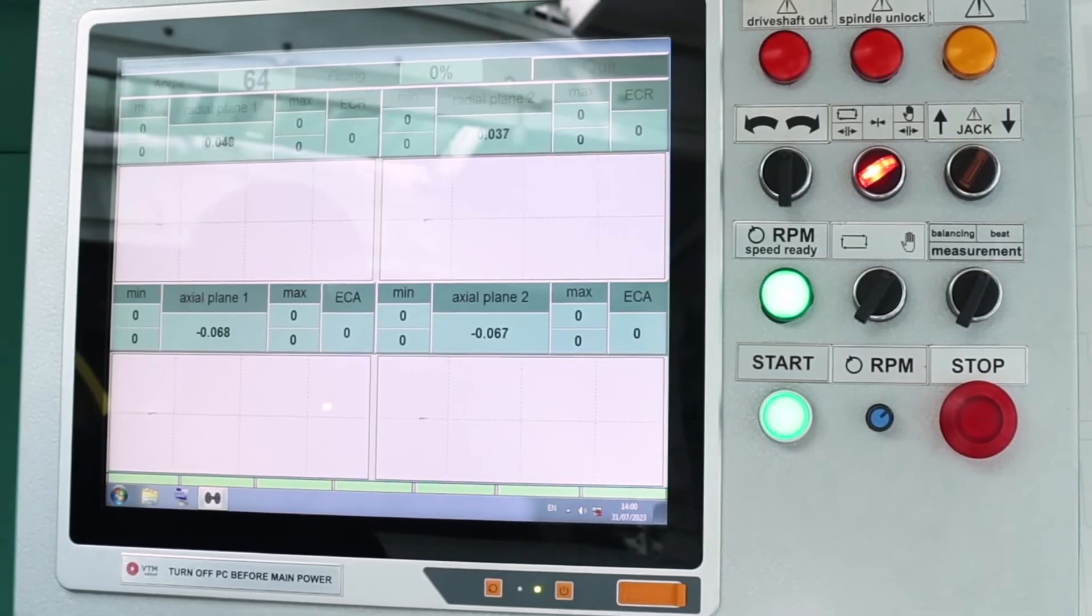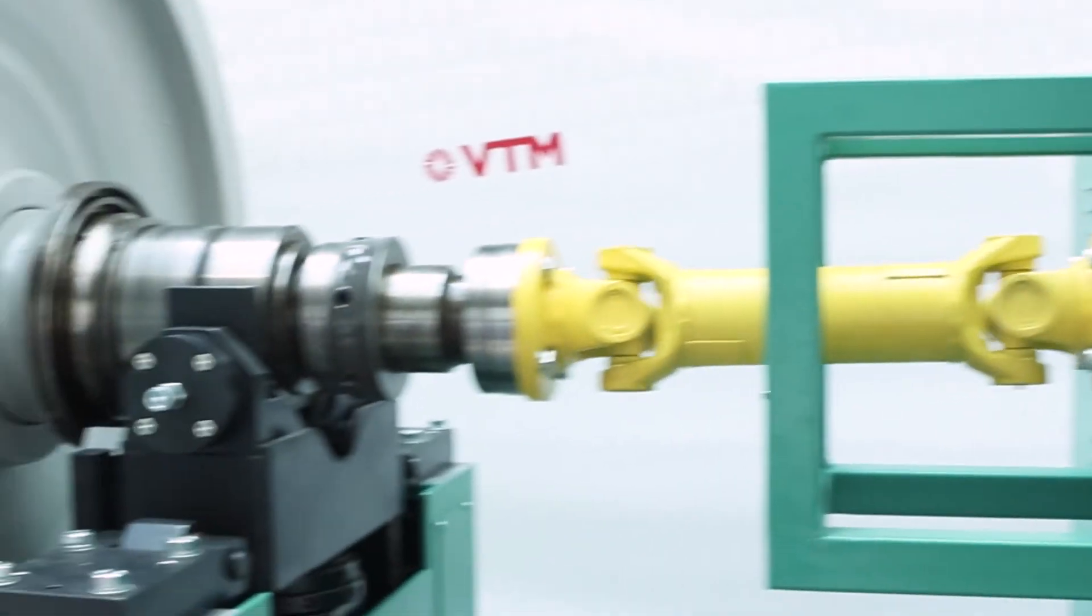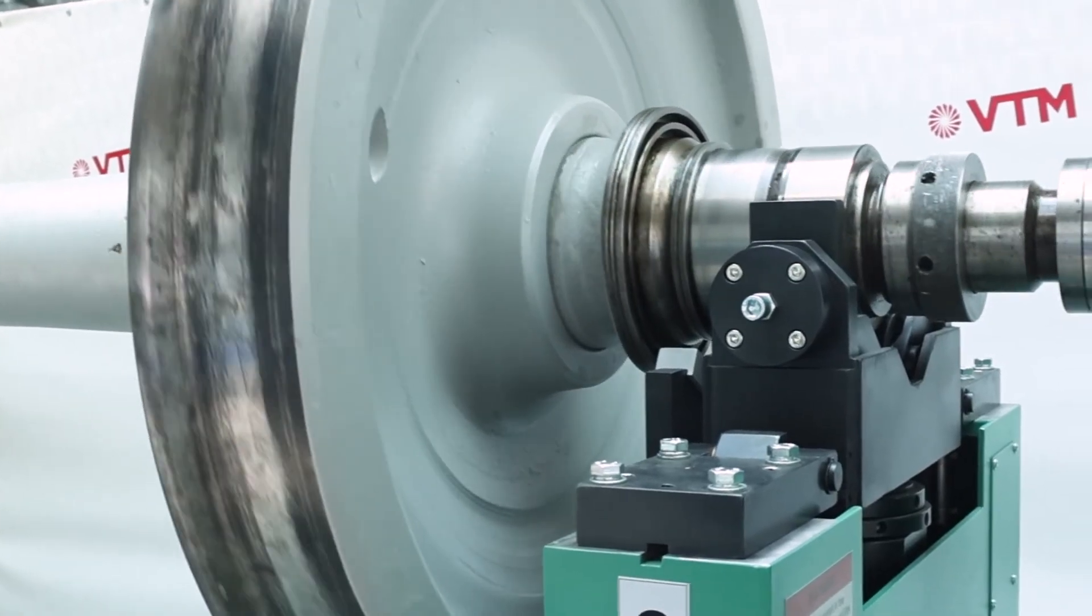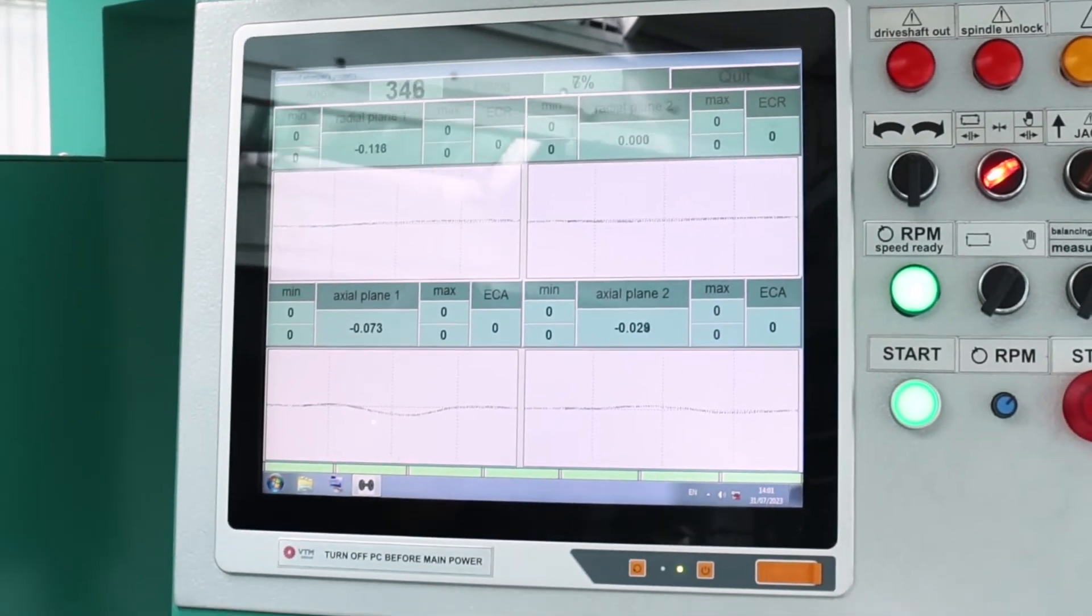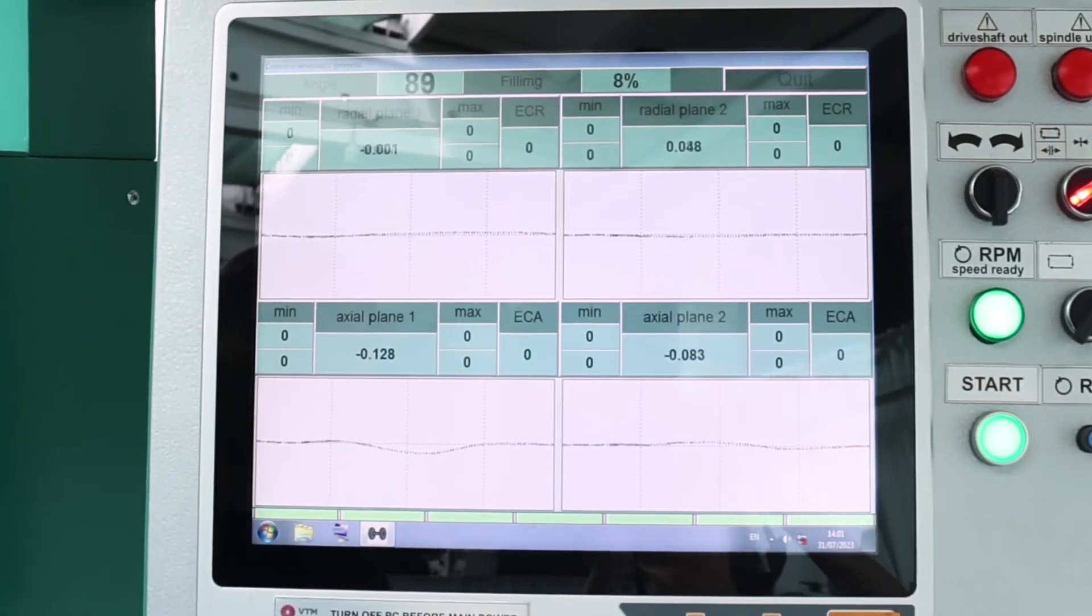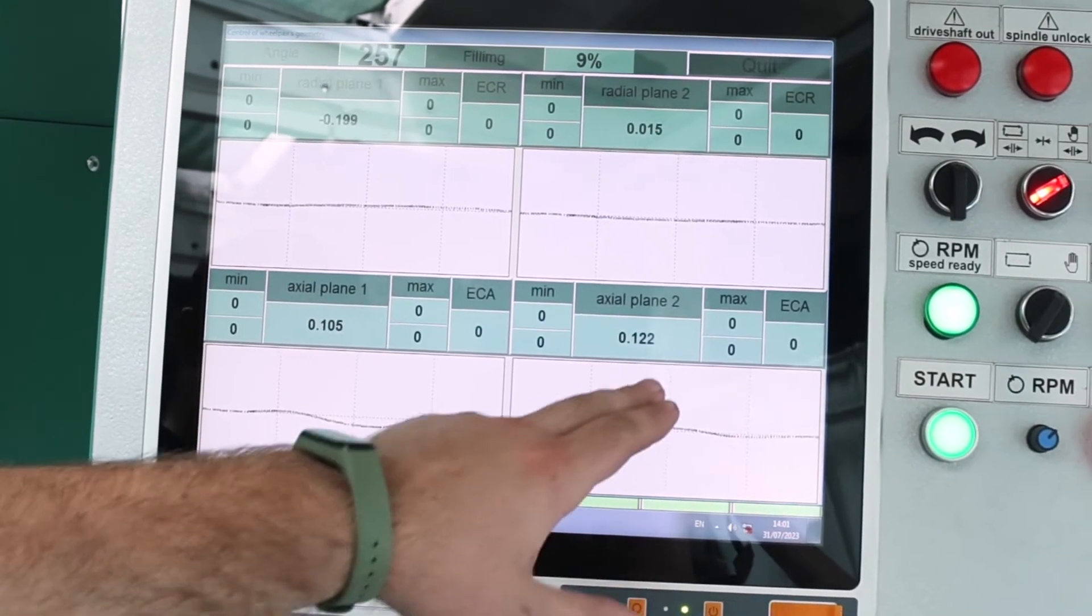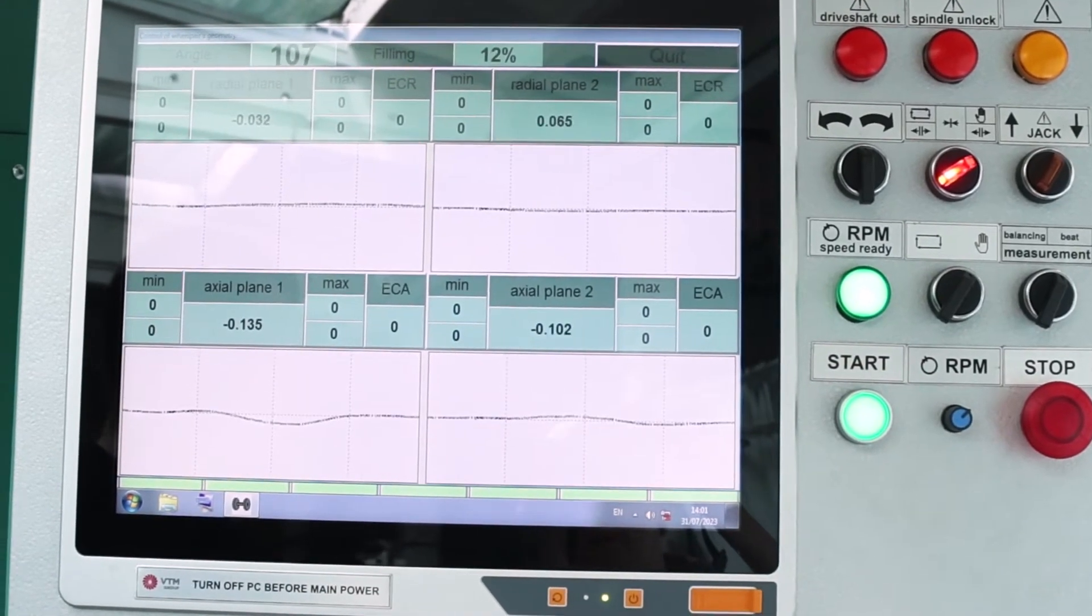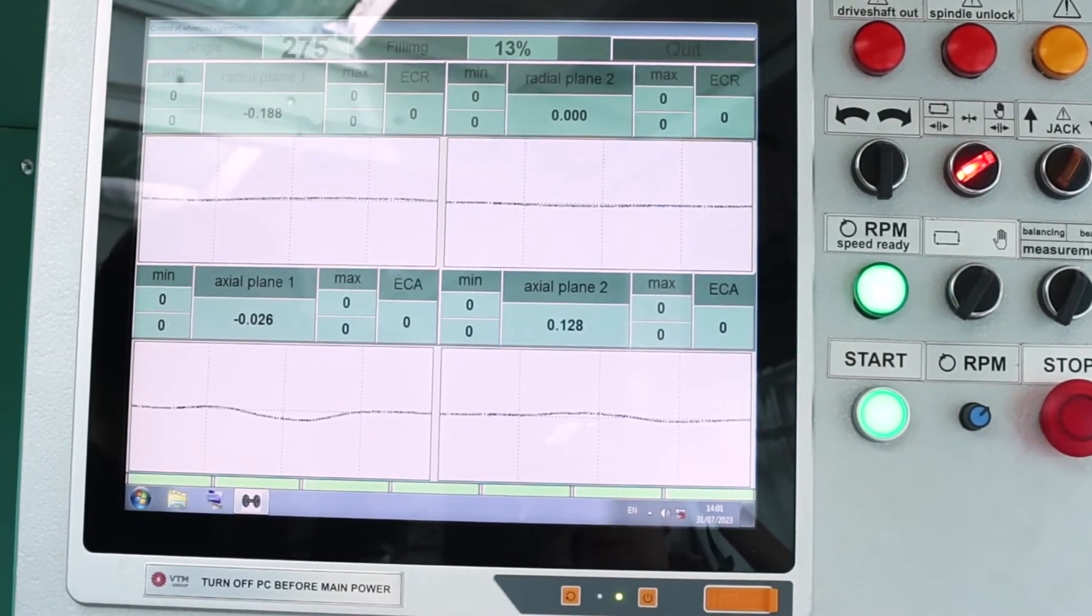Now the process of measuring the run-out is underway. The wheelset rotates slowly, and in real time, the graph is built up on all four planes measured. Here is the radial run-out of the first and second planes and the axial run-out of the first and second planes, respectively. In automatic mode, the occupancy rate should be 21 to 22 percent, after which a stop occurs automatically.